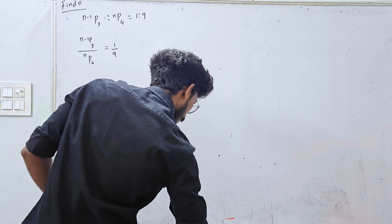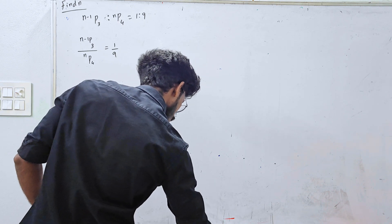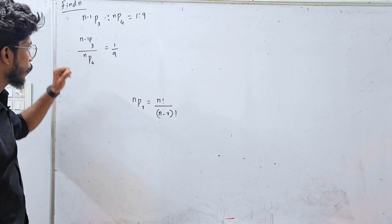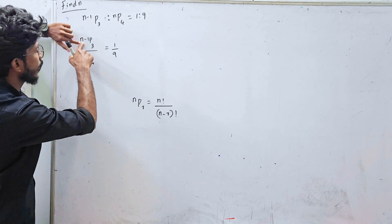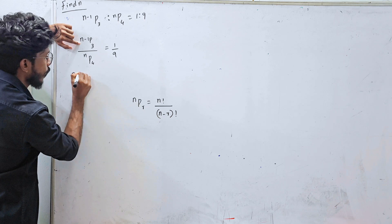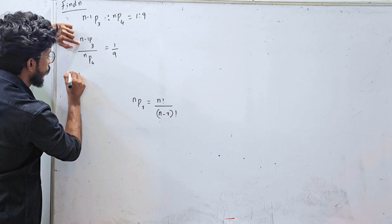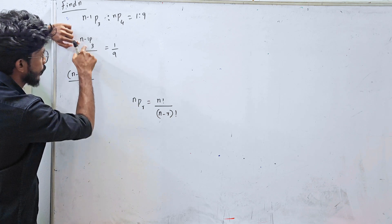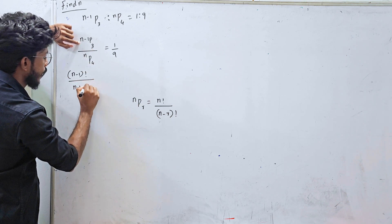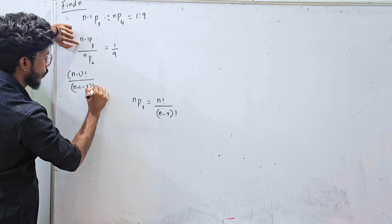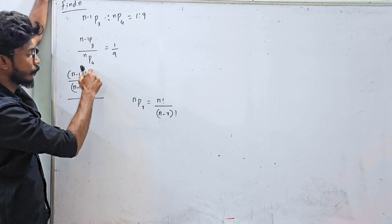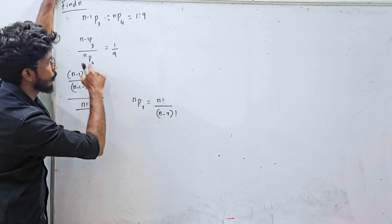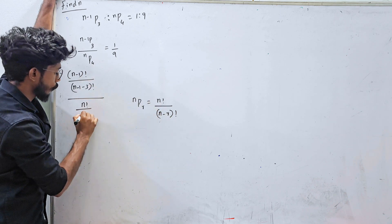The assumption is clear: 1 by 9. Apply the NPR formula. n-1P3 is n-1 factorial divided by n-1 minus 3 factorial. nP4 is n factorial divided by n minus 4 factorial.